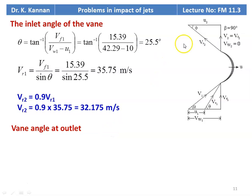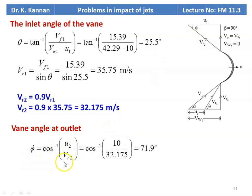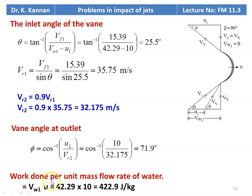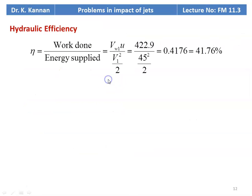The vane angle at the outlet phi = cos⁻¹(U2 / Vr2) = cos⁻¹(10 / 32.175) = 71.9°. Work done per unit mass flow rate = Vw1 × U1 (since Vw2 = 0) = 42.29 × 10 = 422.9 J/kg. Hydraulic efficiency eta = Vw1 × U / (V1² / 2) = 422.9 / (45² / 2) = 0.4176, which is 41.76%.